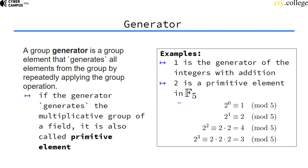In the multiplicative group, it's a generator. That is because if I multiply 2 by itself, I get all the group elements.